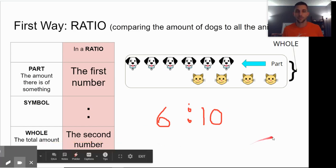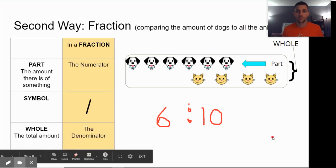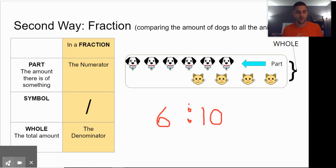If I were then to write the next one, this would be as a fraction. And I could write this as six dogs out of 10 total animals.